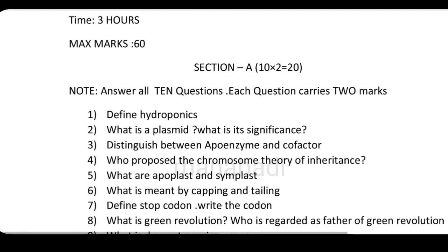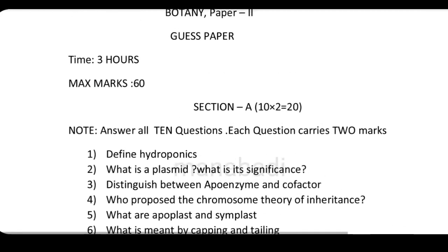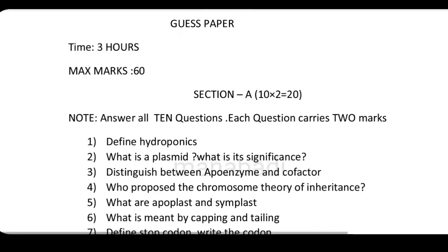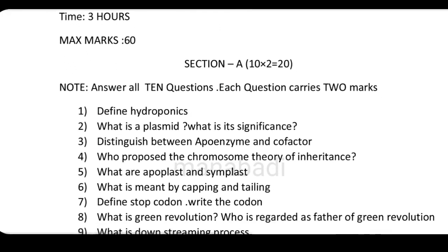So in the first section, I have 20 marks. We will have 10 questions. We will have a choice. So this 10 questions will be 20 marks. So the first question is: define hydroponics. And what is plasmid and what is its significance?